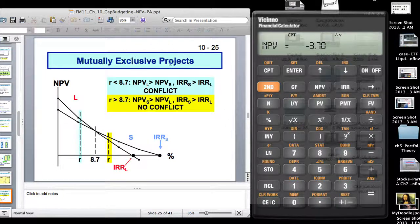The problem is if it's a mutually exclusive project. With mutually exclusive project, we had the crossover rate as 8.7. This looks a little busy, but we are in a graduate class here. R less than 8.7, what do you see? NPVL is greater than NPVS. And IRRS is greater than IRRL. However, IRRS, which is given by 23 percent, is greater than 18 percent. So there is a conflict.